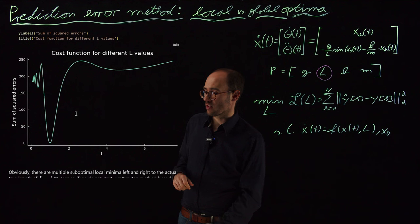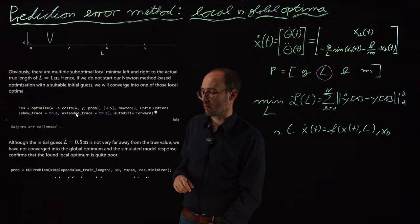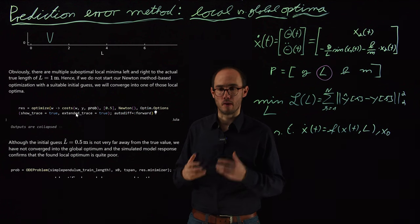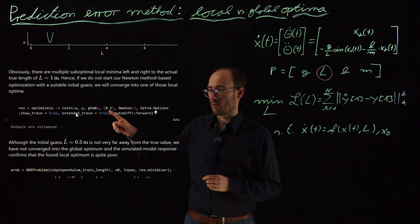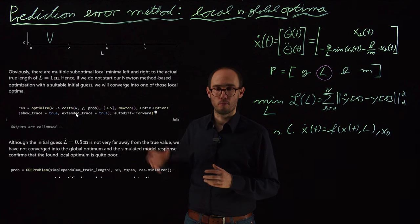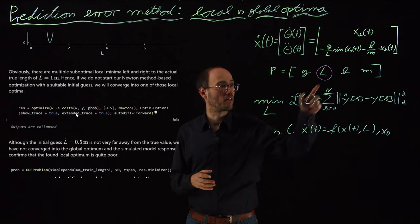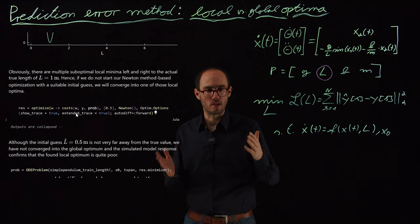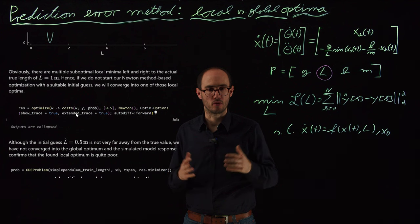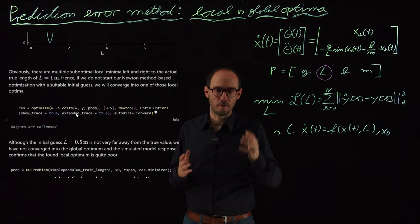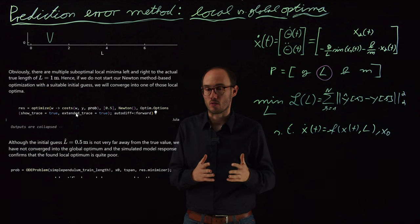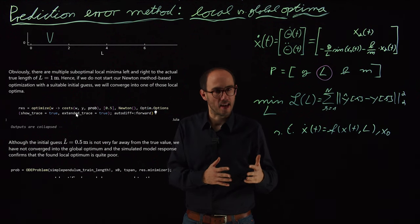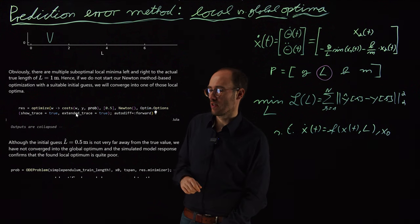Let's just make that a little bit more vivid here, and actually apply our optimization problem again using the Newton method. As a first guess, we will apply an initial guess of 0.5 meters for the length L here. That's not really bad, right? The real length of the pendulum is one meter, so 0.5 meter is at least in the right order of magnitude. From an engineering point of view, I would say that's not a bad guess.